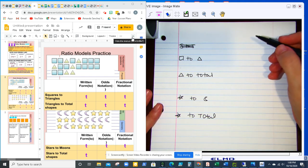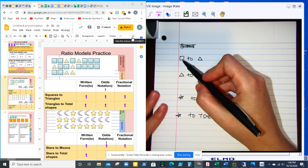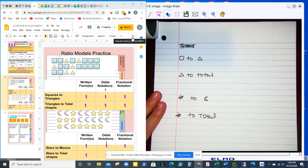Okay, so getting into our ratio model practice, you're going to count the total number of squares. So in the picture that's in your notes, there are 14 squares total.